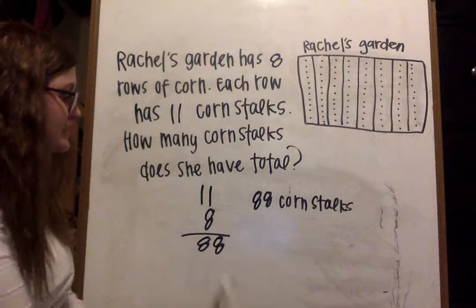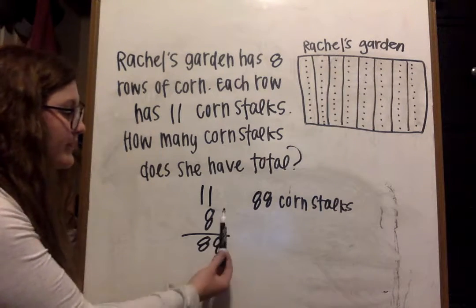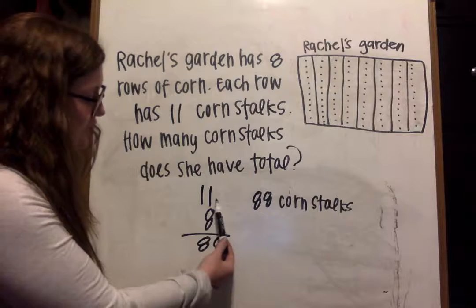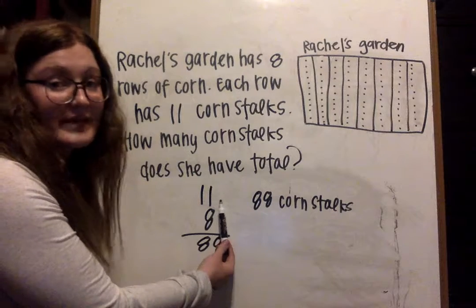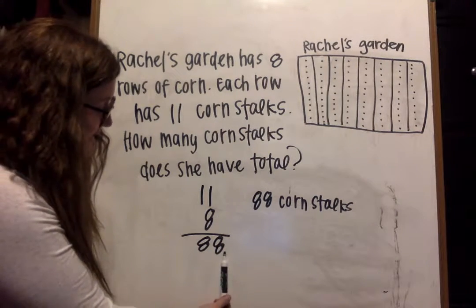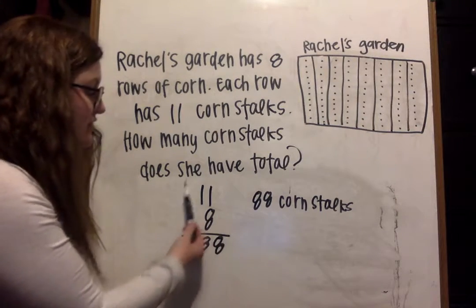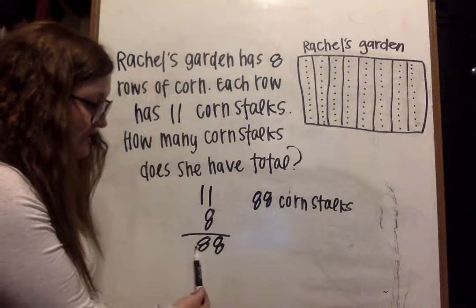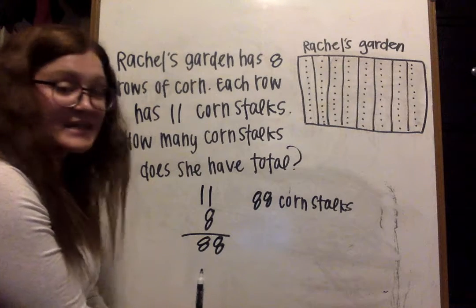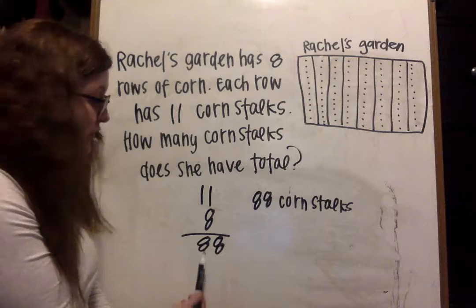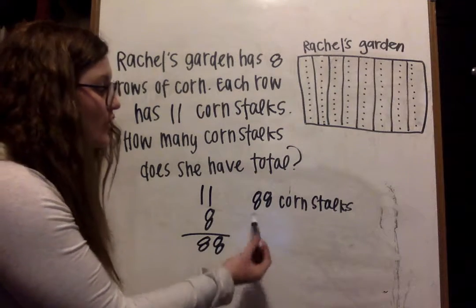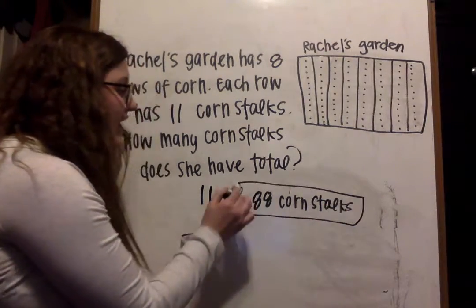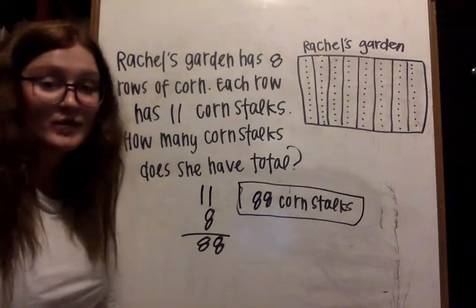Another option would just be to times it out. You would start off by multiplying eight times the one in the ones place, and you would get an eight. Then you move over to the tens place — eight times the one is an eight, so you carry it down to the tens place, giving you 88. So Rachel, in total, has 88 stalks of corn.